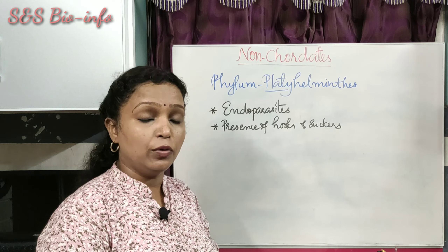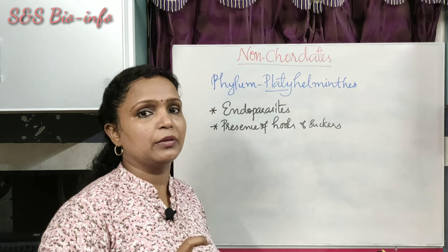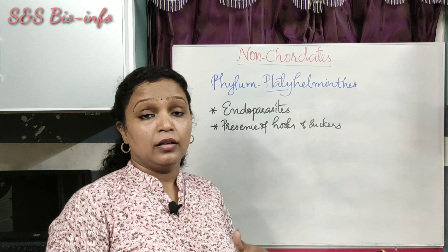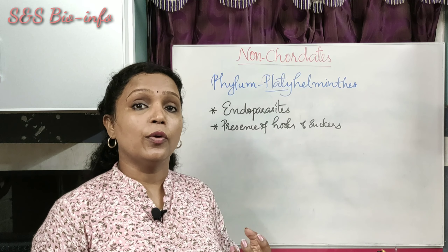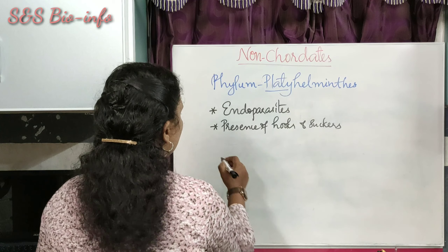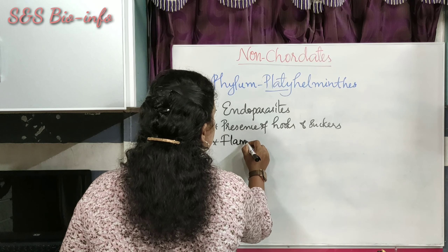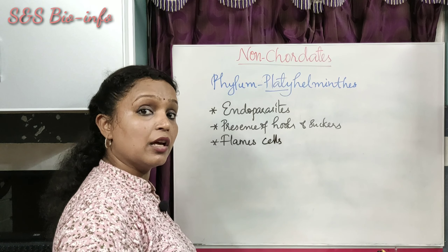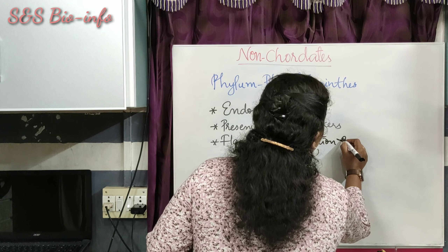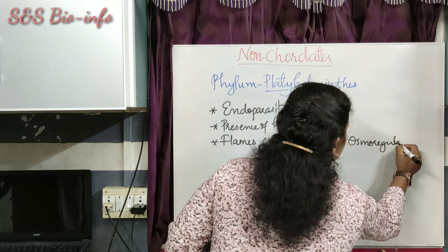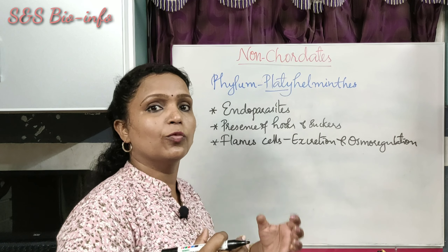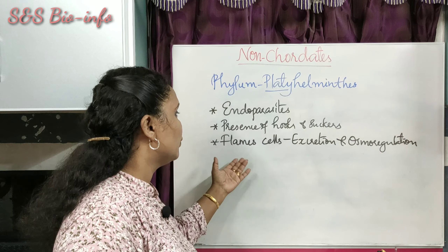Most endoparasites absorb digested food from the host body through their body surface. Some respire and excrete through the body surface, but some have specialized cells for excretion and osmoregulation — these are called flame cells. Flame cells are the excretory organs of Platyhelminthes, helping with excretion (removal of nitrogenous waste) and osmoregulation (maintenance of water balance).